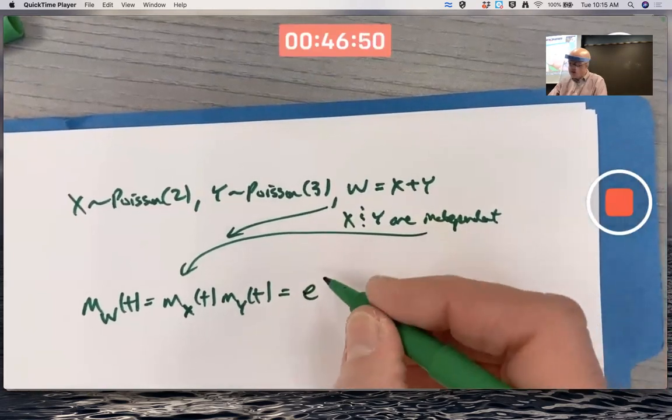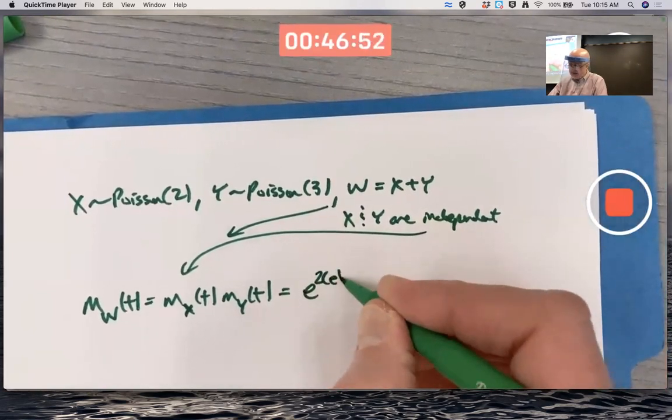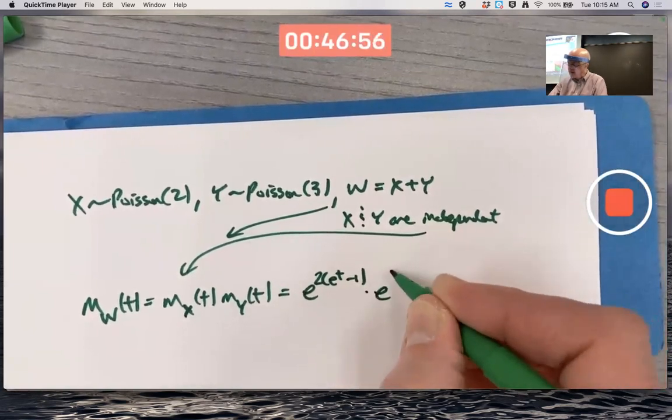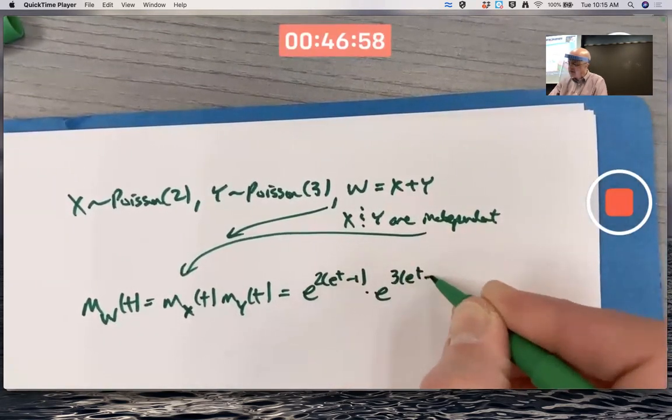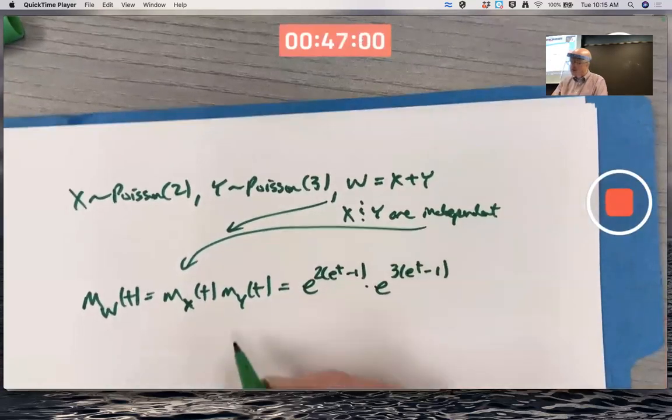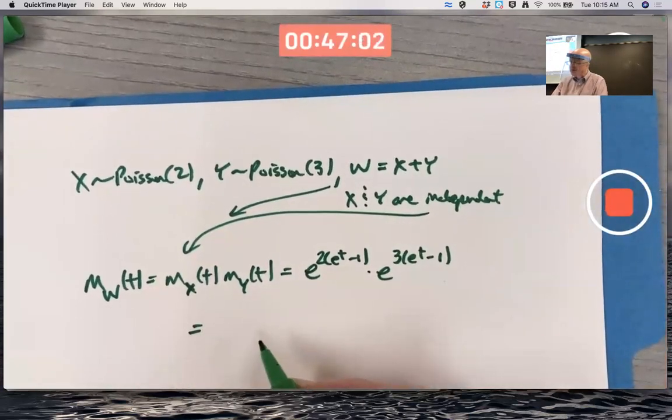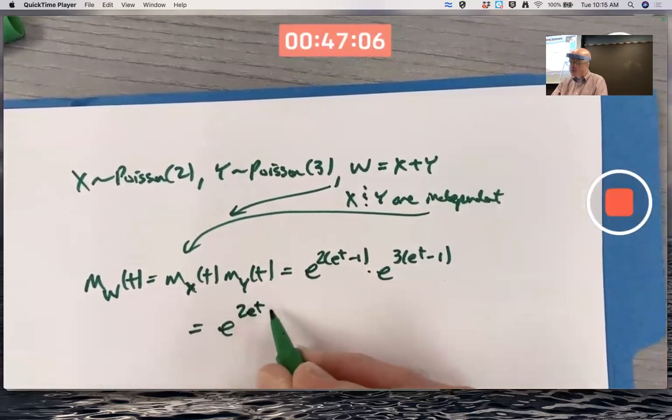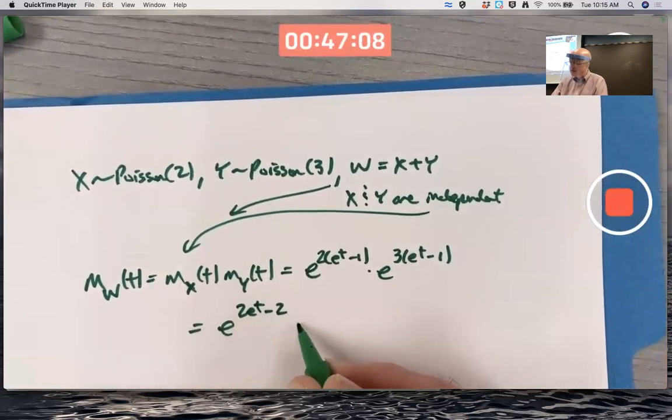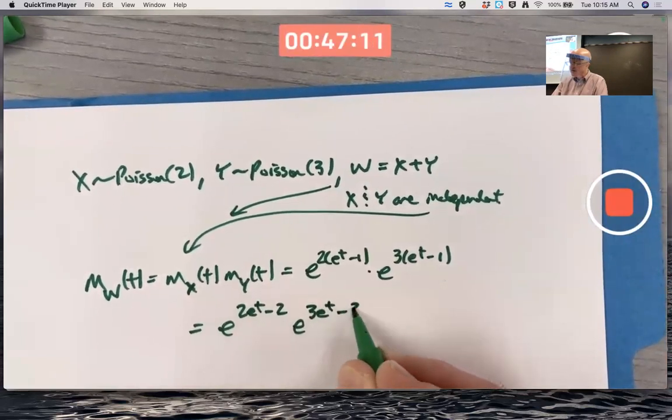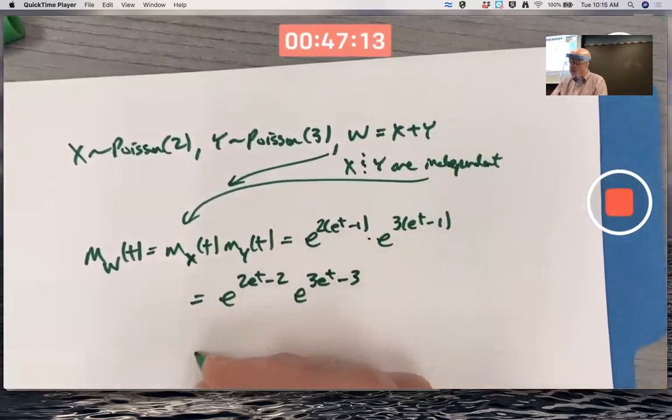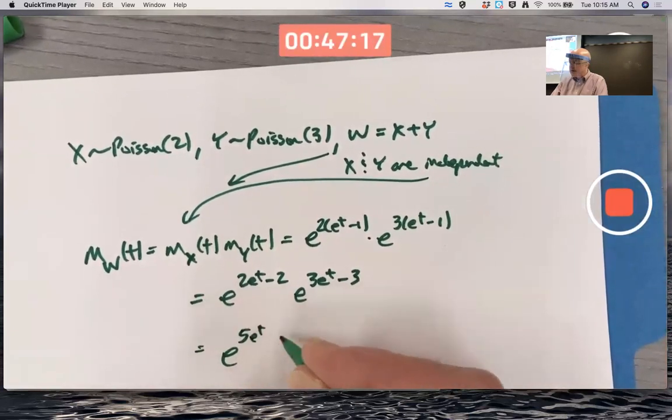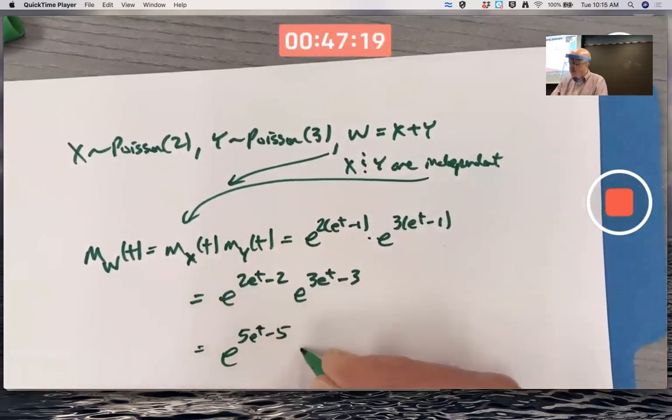K is 2 for X, so I get E to the 2 times E to the T minus 1. And K is 3 for Y, so I get E to the 3 times E to the T minus 1. And then just simplify by adding the exponents. Maybe I should distribute the 2 through the first one first and then the 3 through the second one second and add those exponents. E to the 5 E to the T and then minus 5 and then you can factor out the 5.